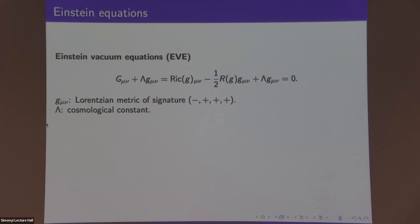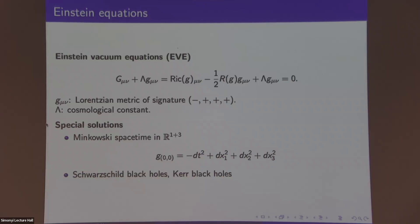Even looking for an explicit solution is not easy, but we do have some. The first is the flat spacetime, the Minkowski spacetime — the analog of the Euclidean metric. The more interesting one is the Schwarzschild black holes, a family parametrized by a mass parameter always greater than zero. The Schwarzschild family is a subfamily of the larger Kerr family, parametrized by mass and angular momentum. If angular momentum is zero, it reduces to Schwarzschild. If mass is zero, we get Minkowski spacetime — corresponding to parameters both zero.